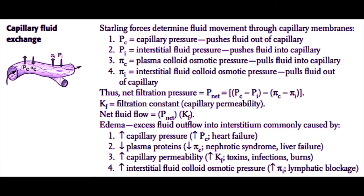Pi sub C is the plasma colloid osmotic pressure, primarily dictated by the plasma protein concentration of the blood — this tends to pull fluid into the capillary. Pi sub I is the interstitial fluid colloid osmotic pressure, and this pulls fluid out of the capillary. These pressures are added and subtracted together to determine the net filtration pressure. The formula is: P sub C minus P sub I minus Pi sub C minus Pi sub I. That net filtration pressure is then multiplied by the capillary filtration coefficient, or Kf.